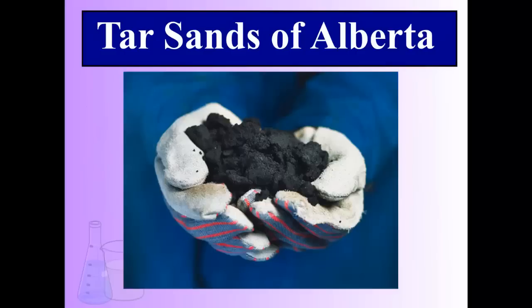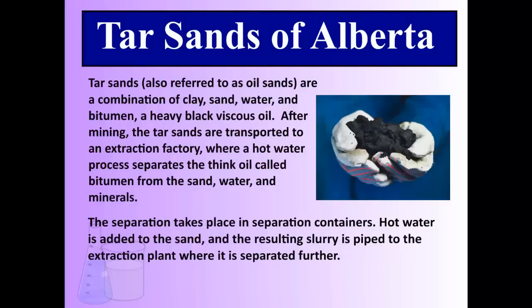The tar sands of Alberta use slurries. In northern Alberta, the oil sands are a combination of clay, sand, water, and something called bitumen — a very heavy, black, viscous oil. After they've mined this oil sands, it's transported to an extraction place where a hot water process separates the thick oil, bitumen, from the sand, water, and minerals. They place this material in a separation container, and the hot water is used to transport the materials from one point to another. While the bitumen is suspended in the hot water, it can be moved much more easily than as a thick, dense material on its own. Once transported, it's extracted and separated further. It's a complex process, but a great example of how Alberta's oil industry uses slurries.